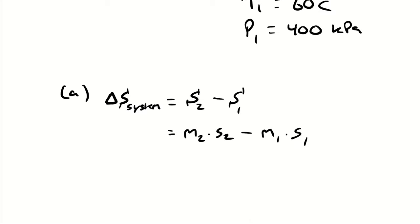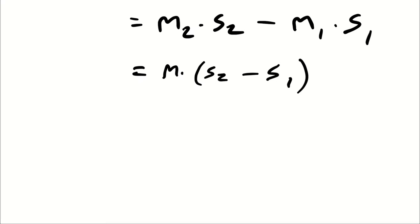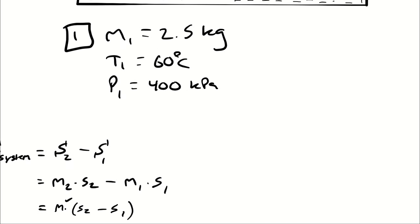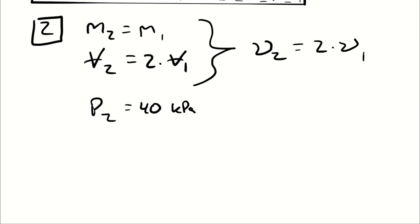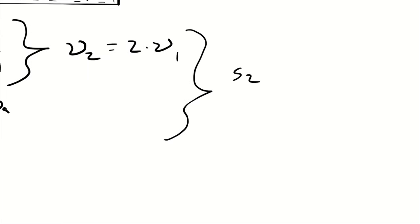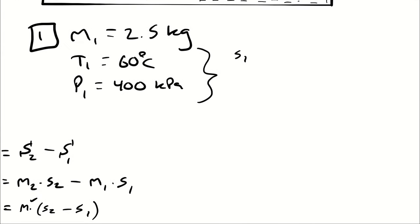Since mass is constant it can be factored out, leaving mass times (s2 minus s1). s1 and s2 come from property tables. Using T1 and P1 I will look up s1, and using v2 and P2 I will look up s2. Since I need v2 to look up s2, I also need to look up specific volume v1 at state one.